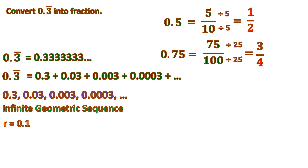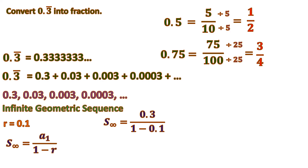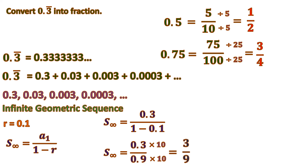To convert the given into a fraction, we get the sum of these terms using the formula for an infinite geometric sequence: S sub infinity equals A sub 1 over (1 minus R), where R must be between negative 1 and 1 — which 0.1 satisfies. Substituting: A sub 1 is 0.3 and the common ratio is 0.1. So 1 minus 0.1 is 0.9. To make both numerator and denominator whole numbers, we multiply by 10: 0.3 times 10 is 3, and 0.9 times 10 is 9. Then we reduce: both are divisible by 3, so 3 divided by 3 is 1, and 9 divided by 3 is 3. Therefore, the fraction form of 0.3 bar is 1 third.